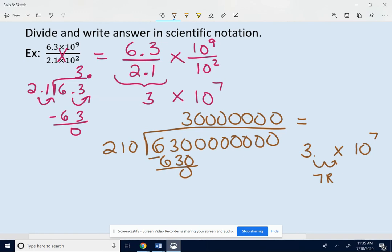Either way, 3 times 10 to the 7. But again, the shortcut: take the two decimals and divide them, top divided by the bottom. And then take your exponents on your 10 and subtract them.